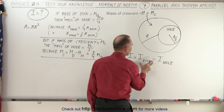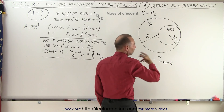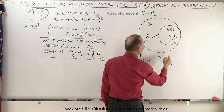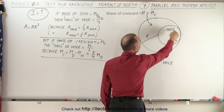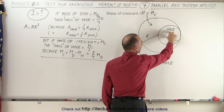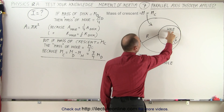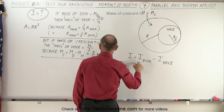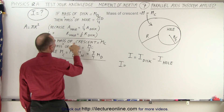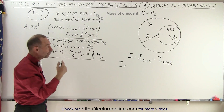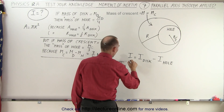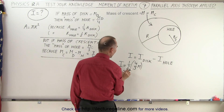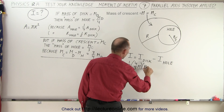The moment of inertia of the disc is simply one-half the mass times the radius squared for a solid disc. Since the mass of the crescent is M, the mass of the total disc will be four-thirds M. So the moment of inertia of the solid disc is one-half times four-thirds M times R squared, which gives us two-thirds MR².